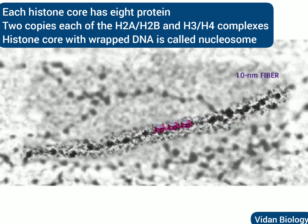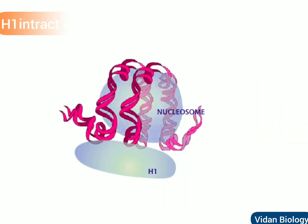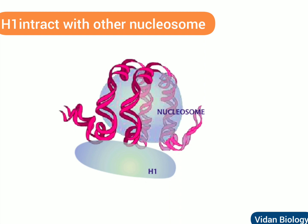This electron micrograph of chromatin shows the structure called the 10 nanometer fiber. The beads are nucleosomes. H1 histone is not part of the histone core; instead, it binds between nucleosomes to give even more structure to chromatin. H1 sits just outside of each nucleosome and interacts with the H1 in the next nucleosome.